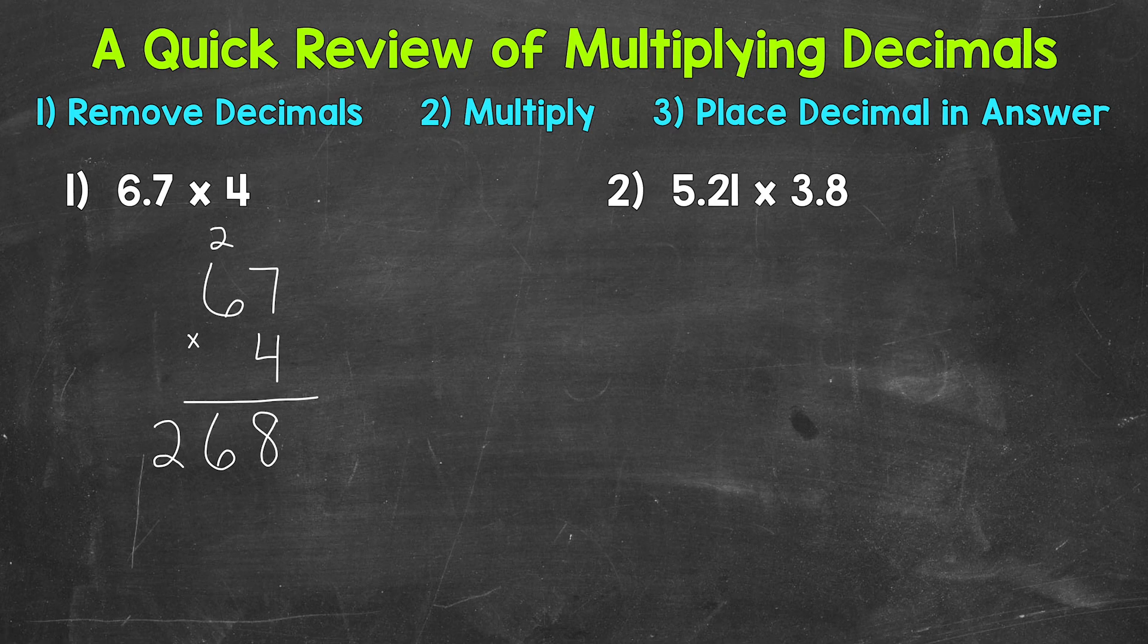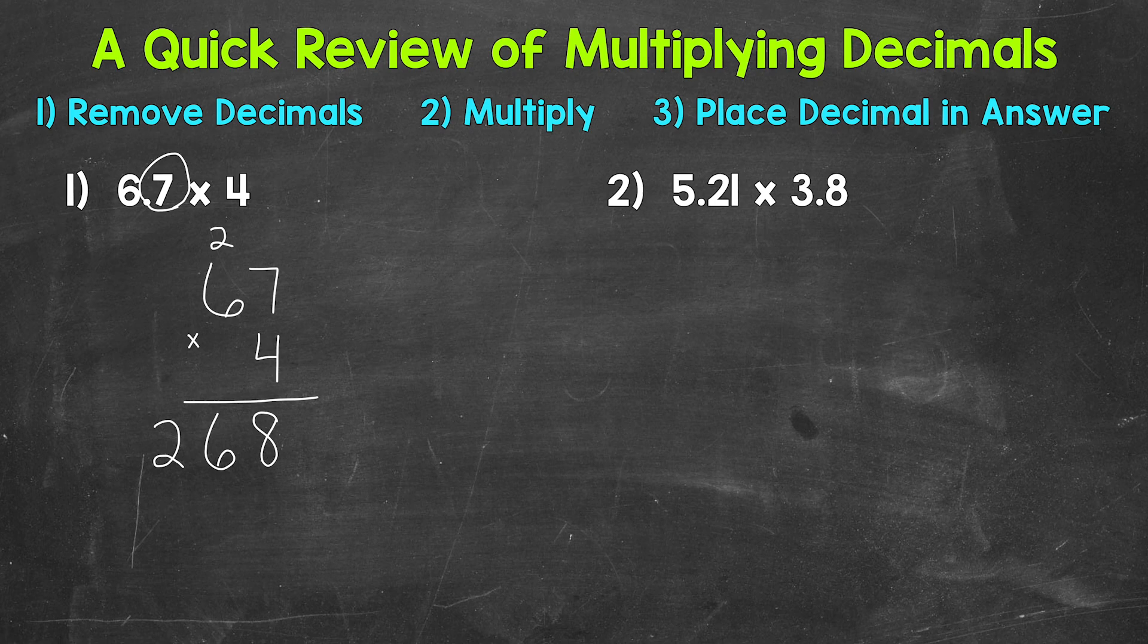Now we're done multiplying, so we can place our decimal in our answer. So we take a look at the original problem and see how many digits are behind or are to the right of a decimal. Well, we have this 7 right here to the right of a decimal. So our answer is going to have 1 digit to the right or behind the decimal. So 1 digit would be this 8.